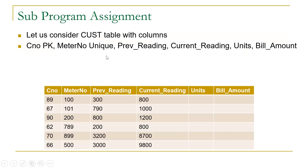This assignment is based on a customer table. In this table we have C_number to represent customer number, which is the primary key. Meter number is a unique column. We have columns for previous_reading, current_reading, units, and bill_amount. The data is populated in four columns: C_number, meter number, previous_reading, and current_reading. The units and bill amount are null for each row.